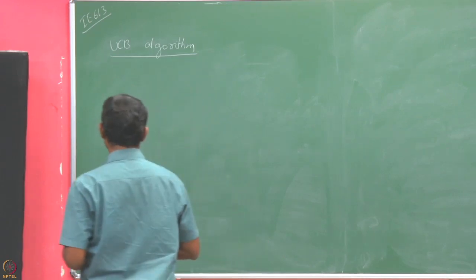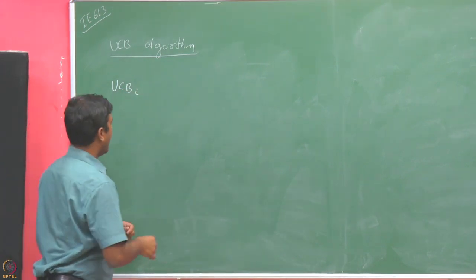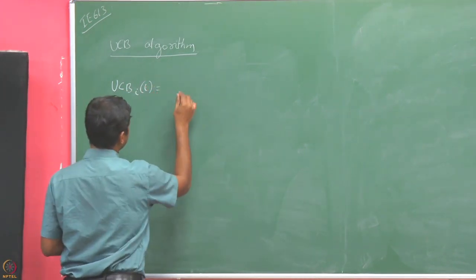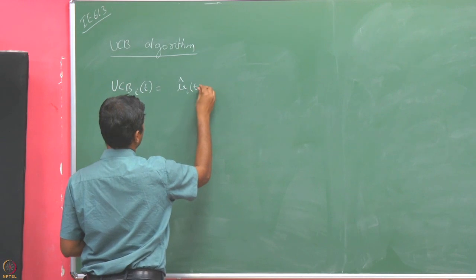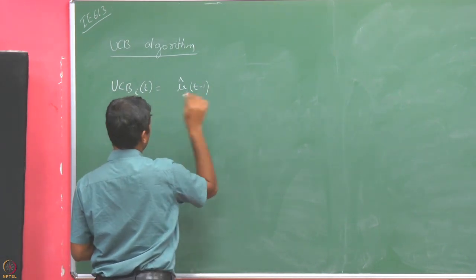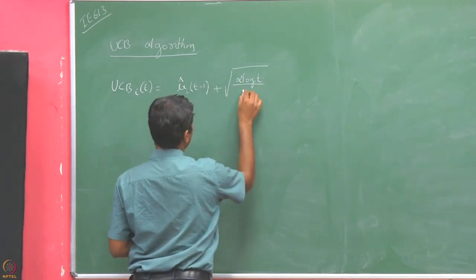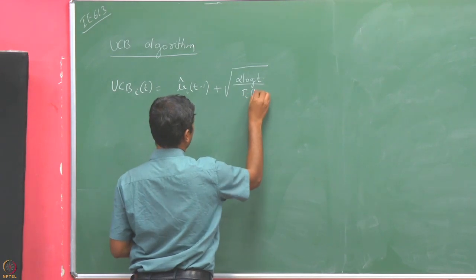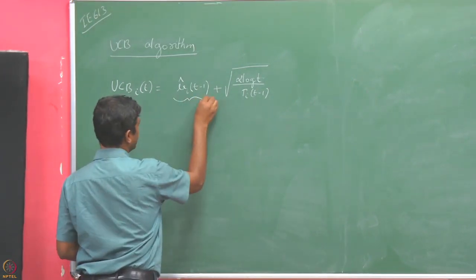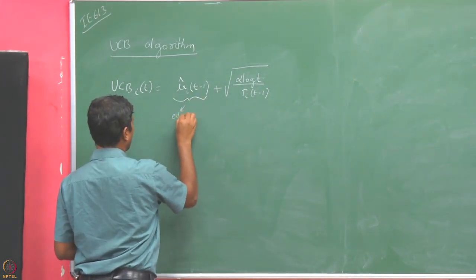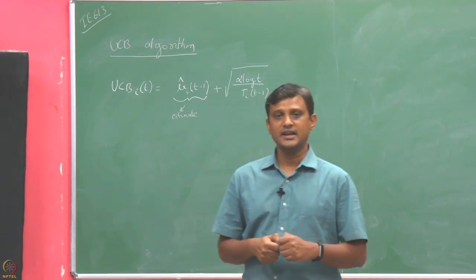What is the index in the UCB algorithm? The index of the UCB algorithm for arm i at time t is defined to be mu-hat_i(t-1) plus alpha * log(t) / t_i(t-1). The first term, mu-hat_i(t-1), is the estimate based on the number of samples of arm i observed till time t minus 1.